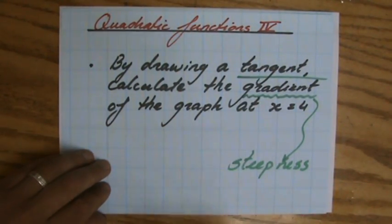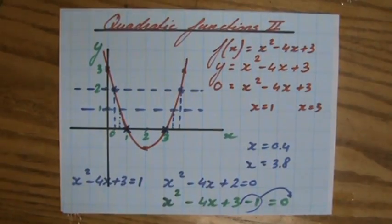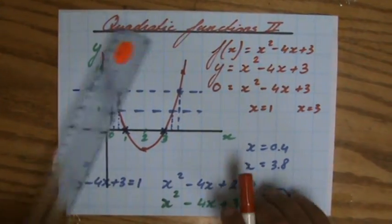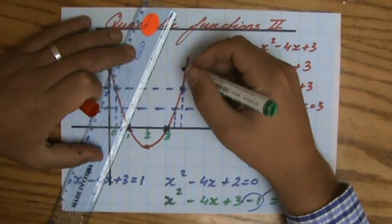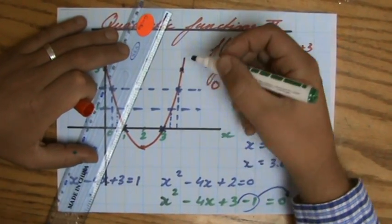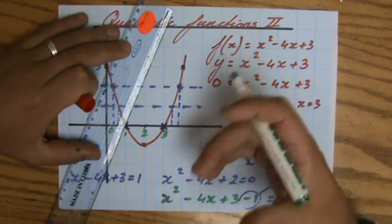And a tangent is a touchline. At point x is 4. A touchline at point x is 4. Now what is a touchline? It is a line just barely touching the graph at that point. Okay? And then we're going to find the gradient of that line.